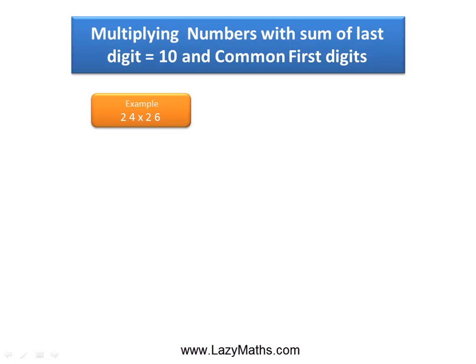Here's an example of multiplying numbers with sum of last digit equal to 10 and common first digits: 24 times 26. As you can see, the number 2 of 24 and the number 2 of 26 are the common digits, and the numbers 4 and 6 add up to 10.